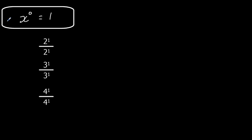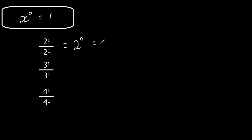The first rule: anything to the power of zero is one. To explain this, we go back to our other rules of indices — when we divide, we subtract the powers. So we've got two to the power of one divided by two to the power of one. One take away one is zero. So two divided by two is the same as two to the power of zero, and two divided by two is one.